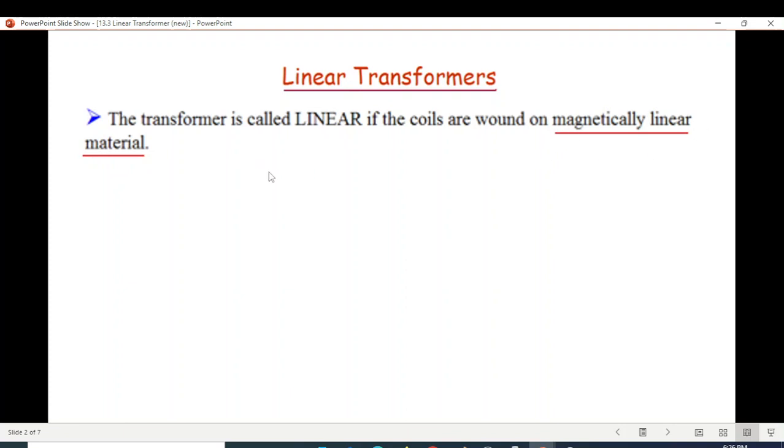Magnetically linear materials include air, plastic, bakelite, and wood. That is non-ferrous material.